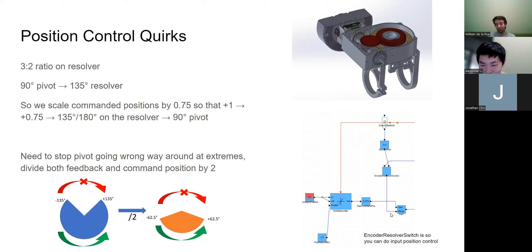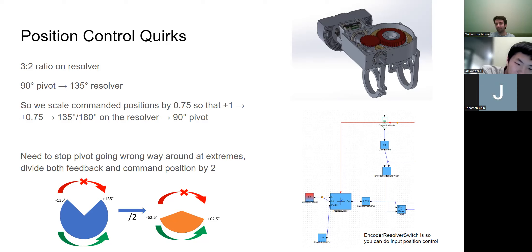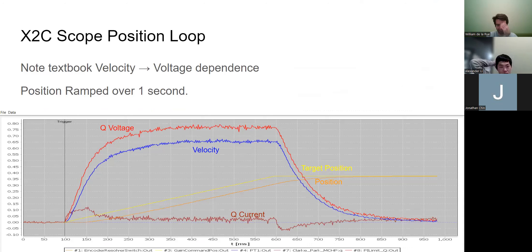There's also an encoder/resolver switch in the block diagram that allows position control on the motor side within an electrical cycle. It's not tuned for that mode and is somewhat deprecated - it exists as an option but we don't use it normally.